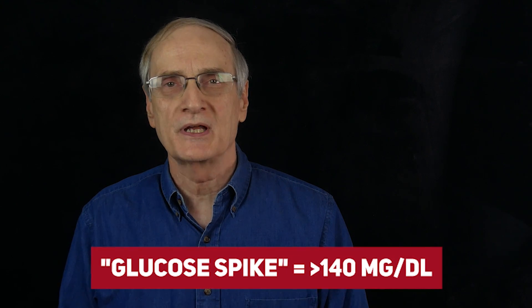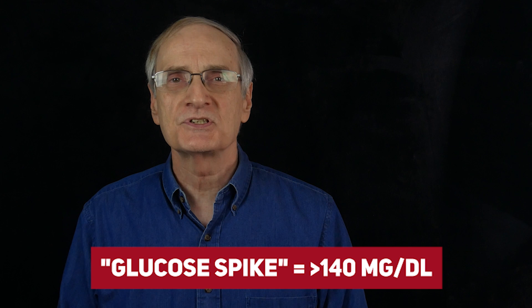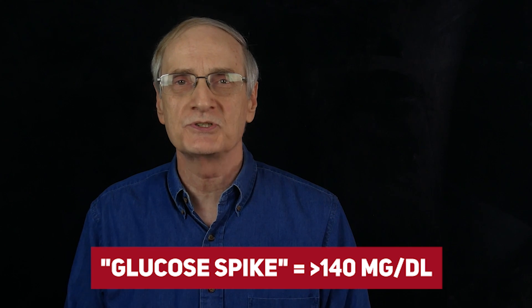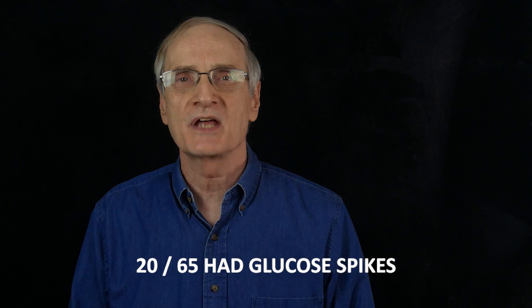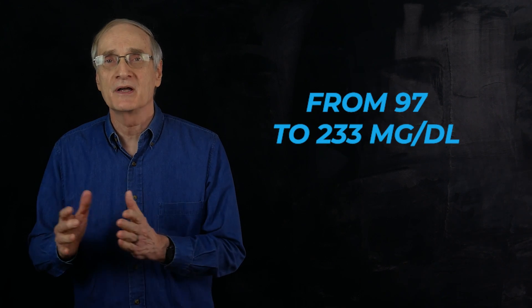The determination of what is a glucose spike was a glucose reading of over 140 milligrams per deciliter two hours after eating. And of the 65 people in this one business, all of whom had normal fasting blood sugar, 20 were found to have glucose spikes. One young man in his 20s jumped all the way from 97 up to 233.